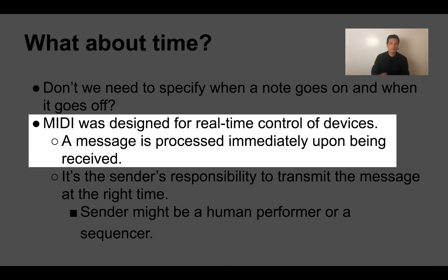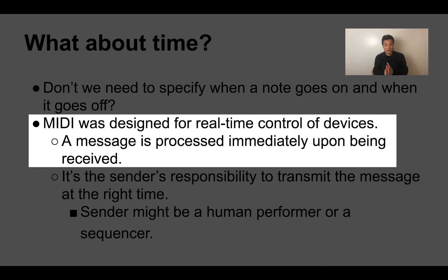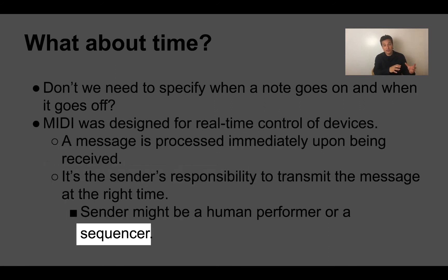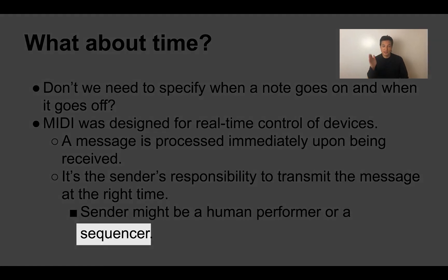Now of course, with personal computers becoming ubiquitous, there have been software tools built so that we can start to compose music based around the MIDI protocol. In order to compose, you want to remember when exactly an event happens — when the note goes on, when the note goes off — and you want the computer or the sequencer to remember that information so that each time you play it back, you get it at the right time. So how do we actually encode time in MIDI? That's the question.